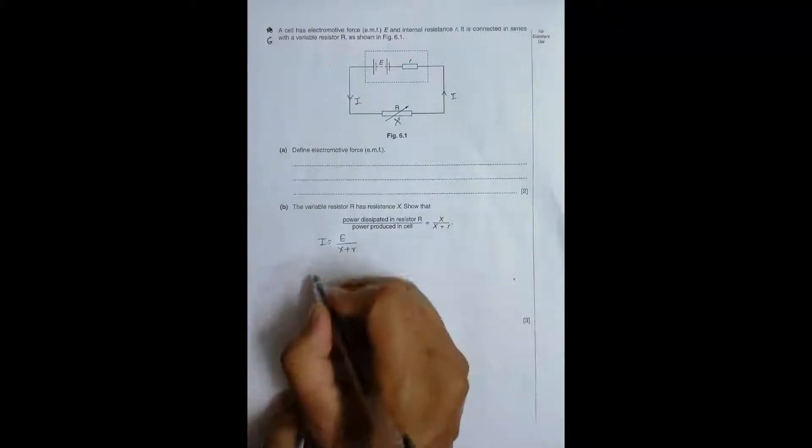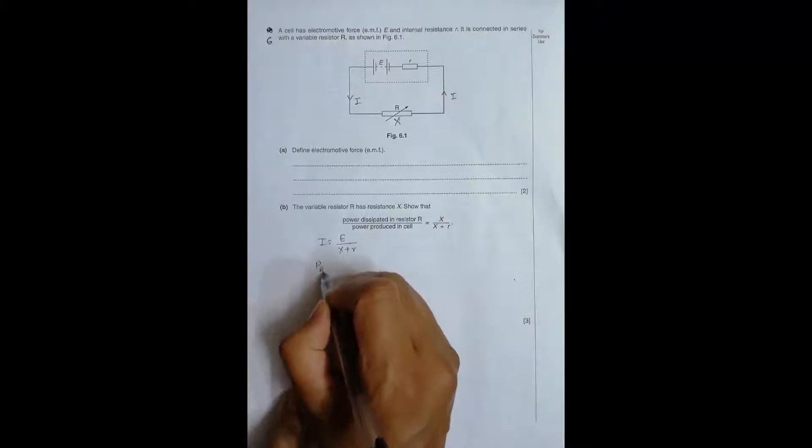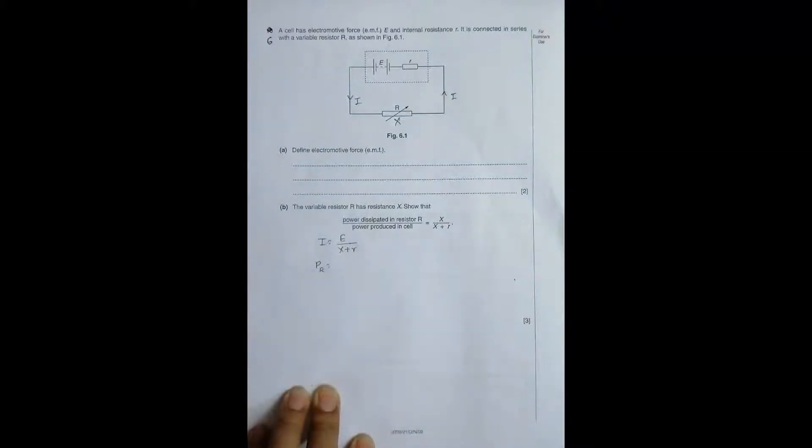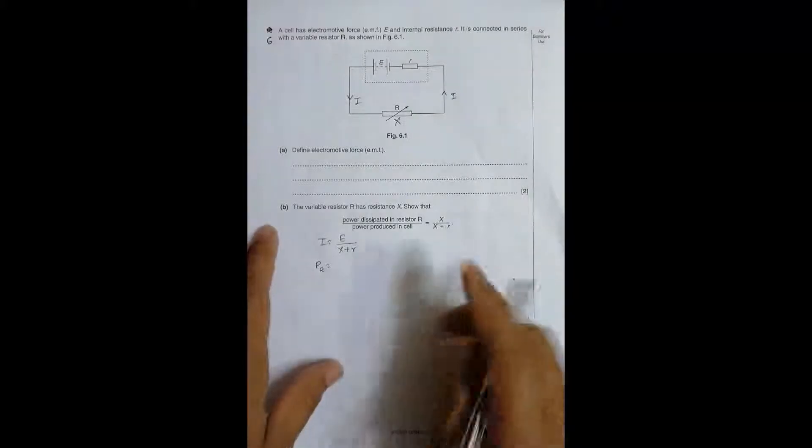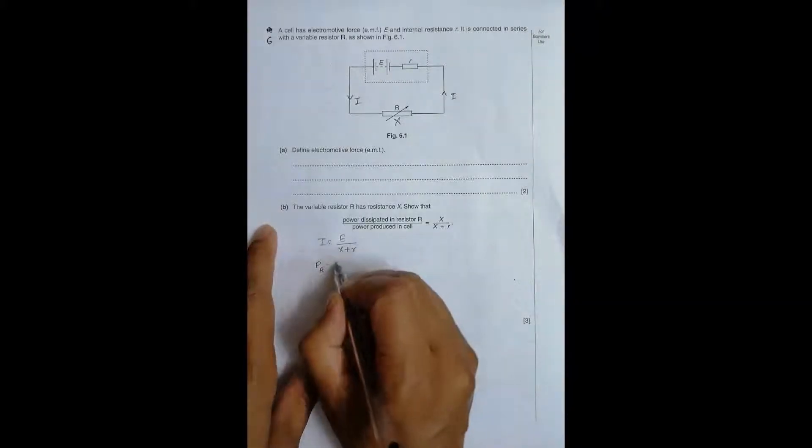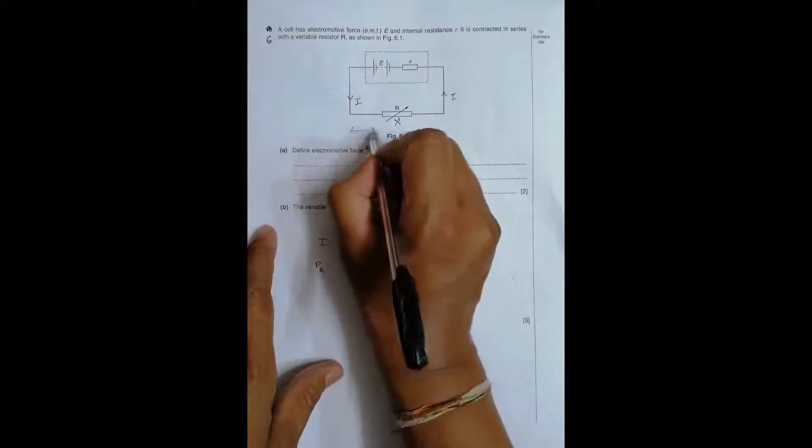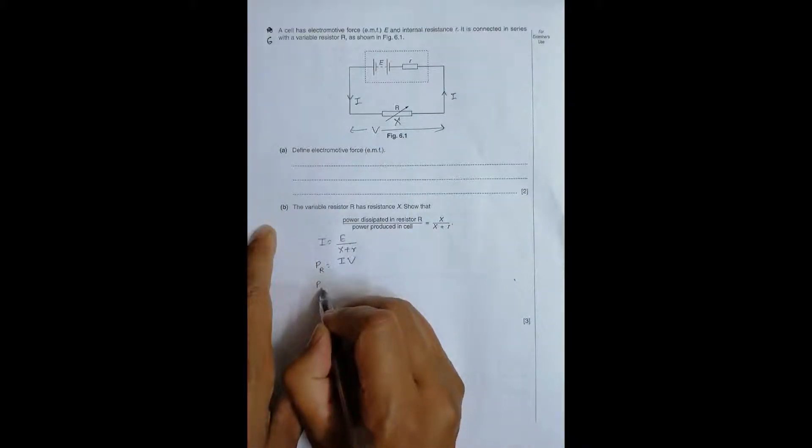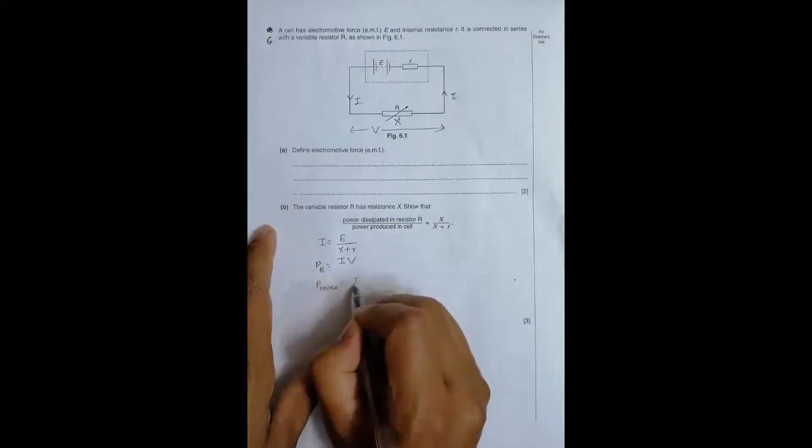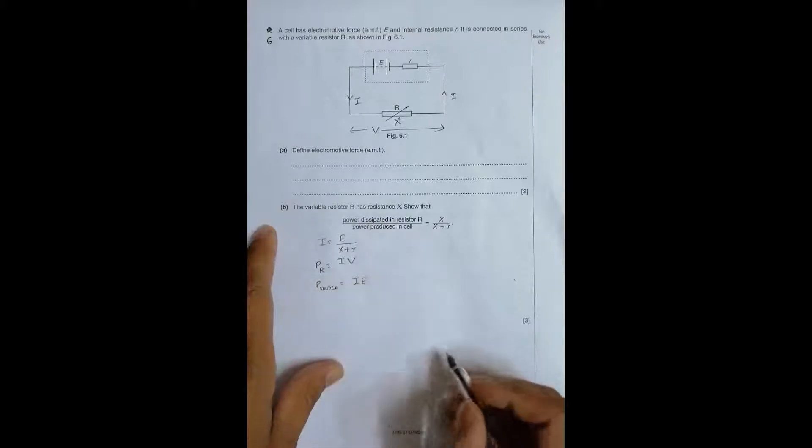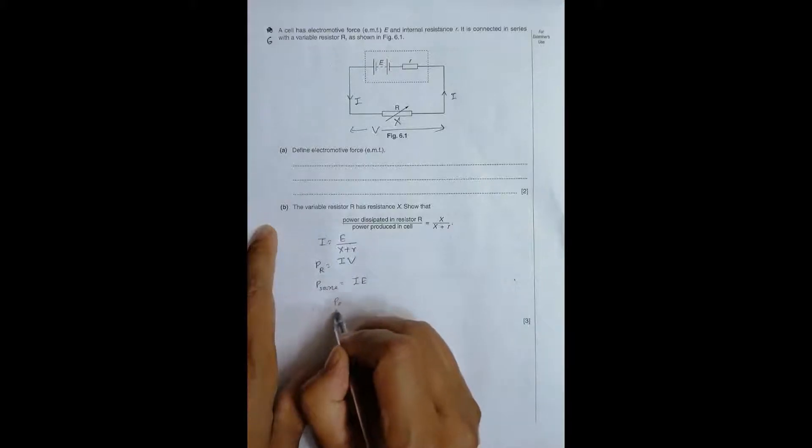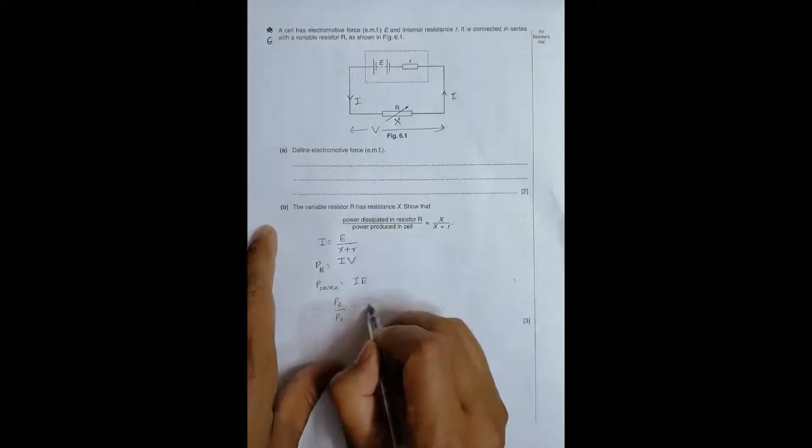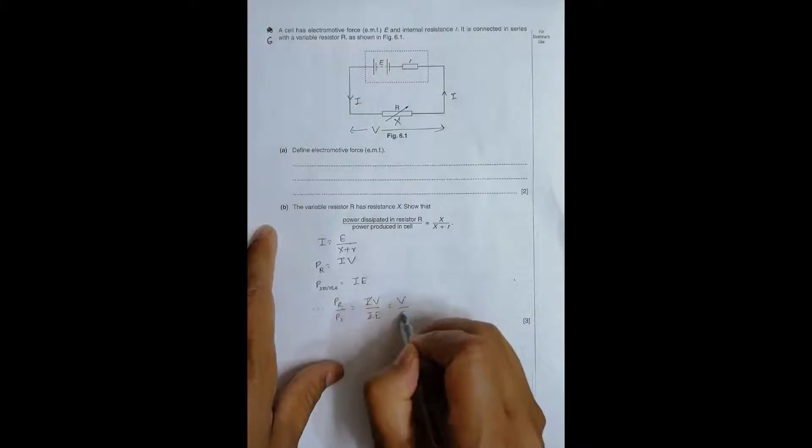Power in resistor R is equal to I into V here. V is the terminal potential difference. And similarly power given by the source is equal to I into E. Therefore power in resistor by power in source should be equal to I V by I E and that's equal to simply V by E.